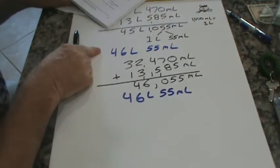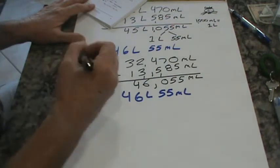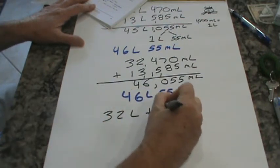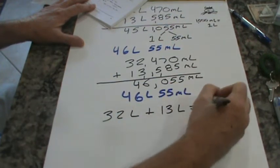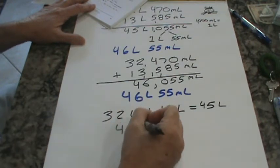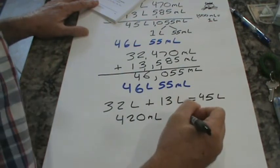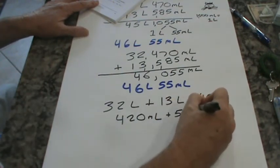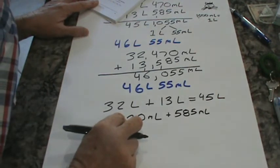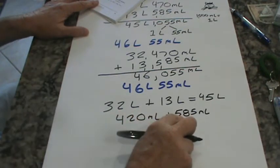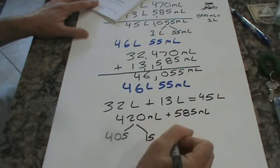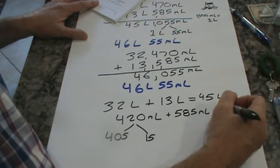And let's say we have one other way to crack this cookie. That doesn't make any sense. You don't crack cookies. Crack this egg, maybe. And what we're going to do is we're going to break down the liters first. So we'll say 32 liters plus 13 liters equals what? Well, 2 plus 3 is 5, and 3 plus 1 is 4. So that would equal 45 liters. Then we would take the 420 milliliters and we're going to add 585 milliliters. And we're going to break this one apart.